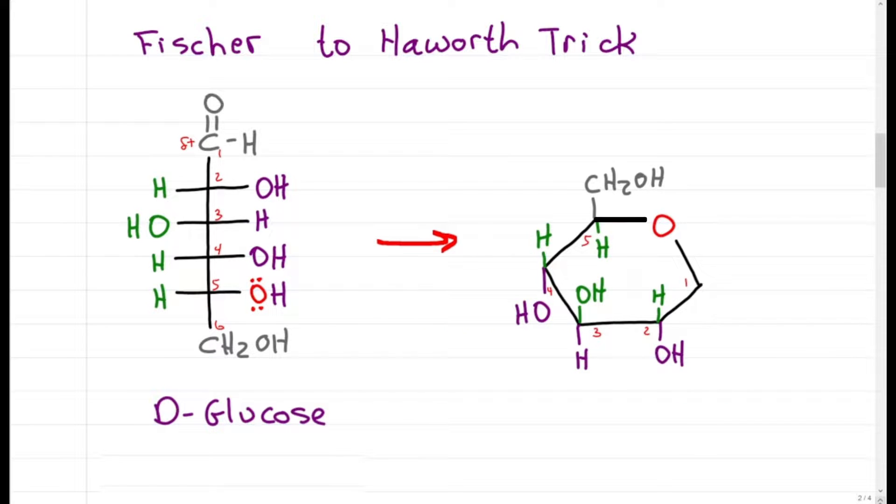We're almost there. All that's left is the anomeric carbon, that's carbon number 1. That's this one right here, which turns into an OH after the pi bond breaks. Since the carbonyl carbon was sp2 hybridized, and sp2 is trigonal planar or flat, the attack could have come from the top or the bottom.